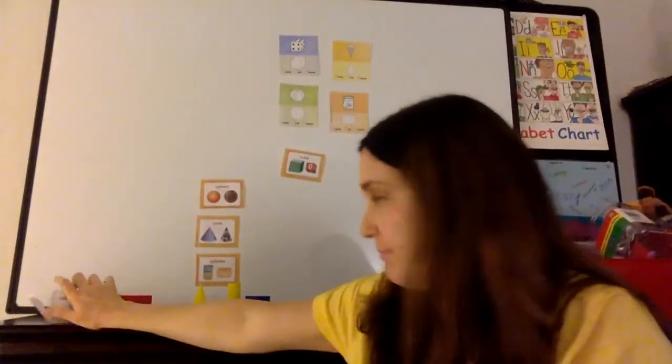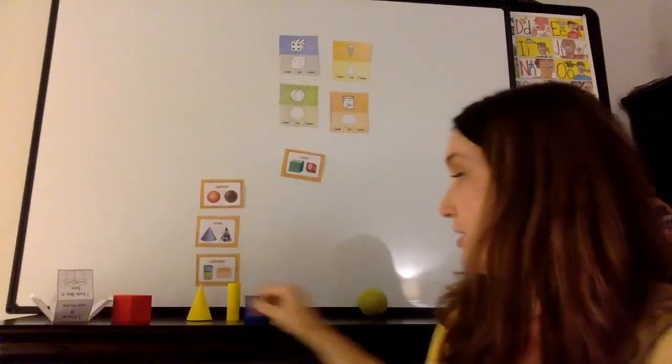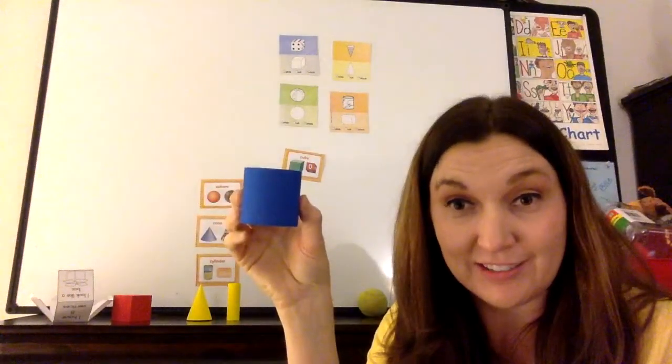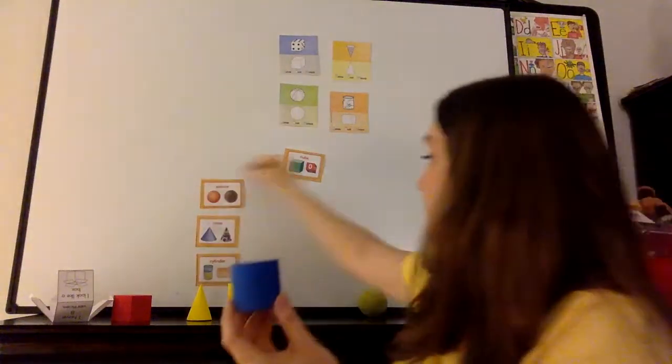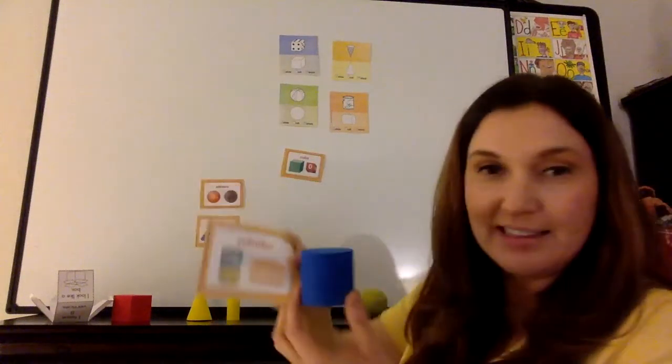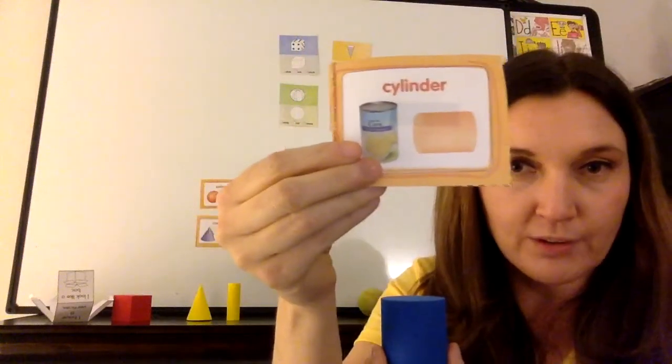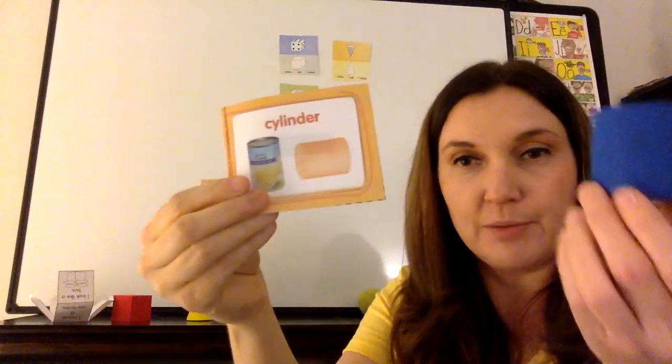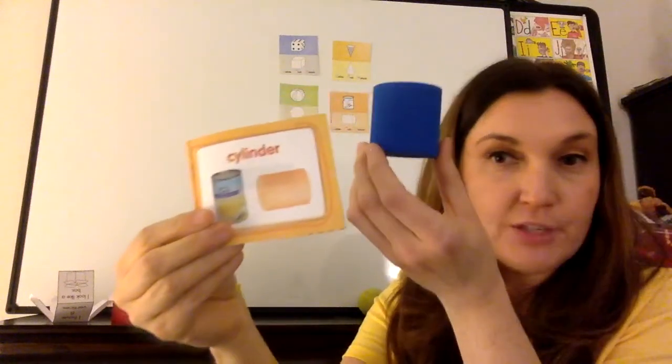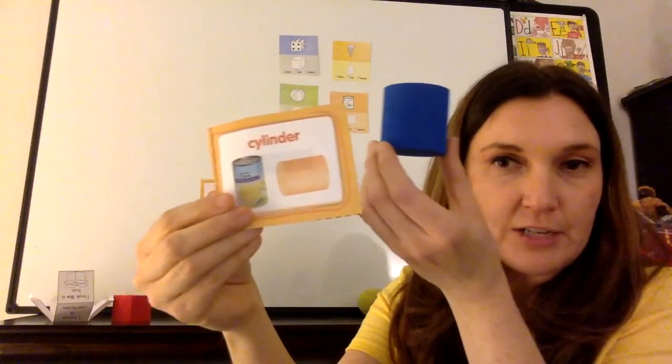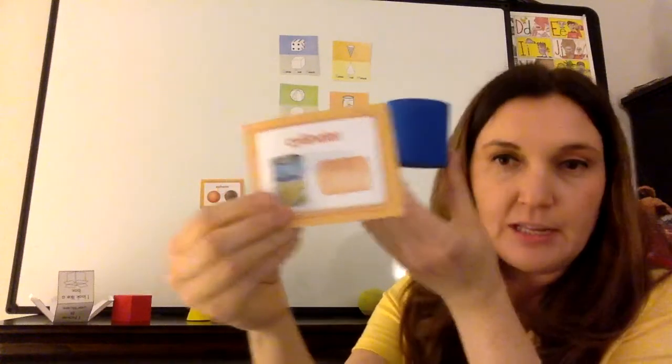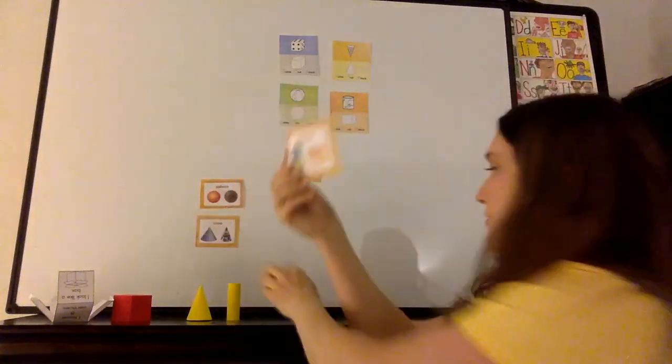Our next shape is called a cylinder. Cylinder. I think the cylinder might be my favorite shape. So if you have like a can of corn, that would be a cylinder. A can of soda.